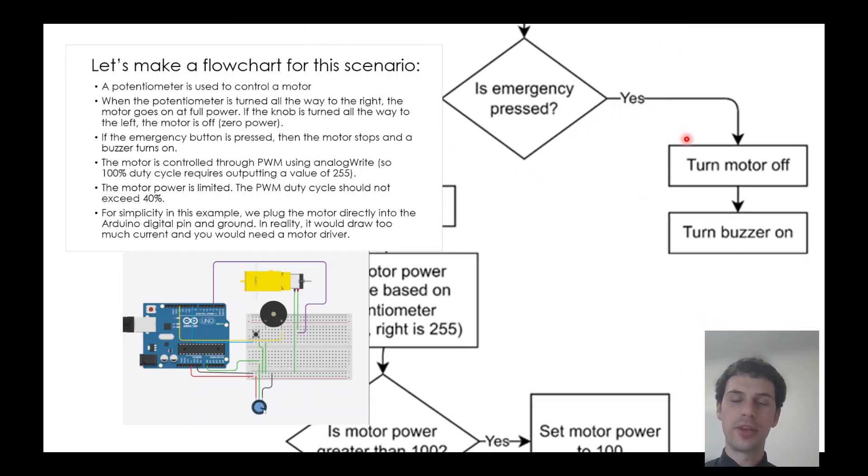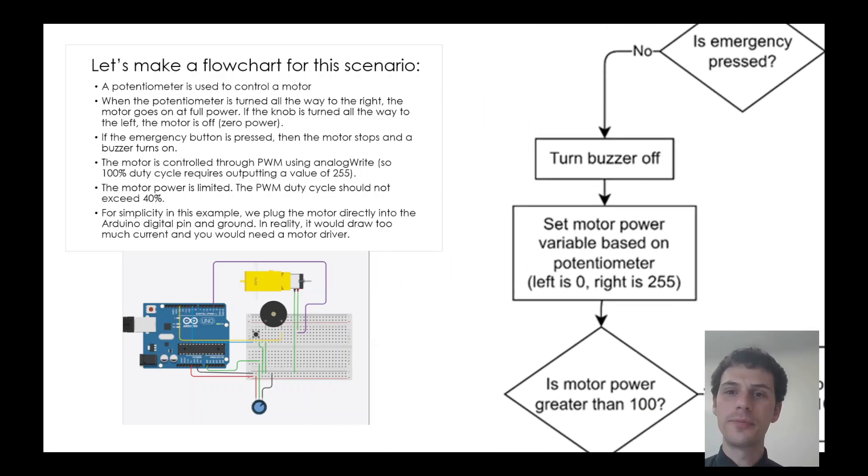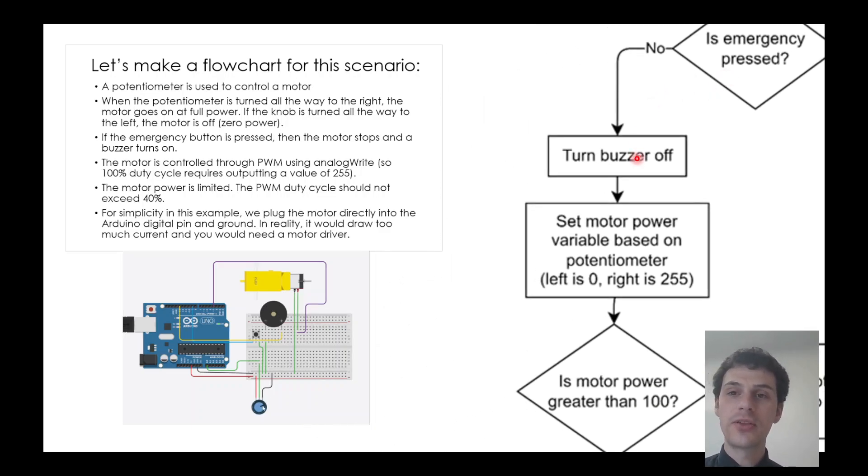In the yes branch, if the emergency button is pressed, I need to turn the motor off and turn the buzzer on. If it's not pressed, then I turn the buzzer off, because I'm not pressing the emergency button.